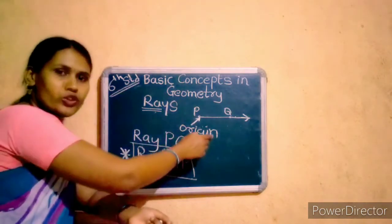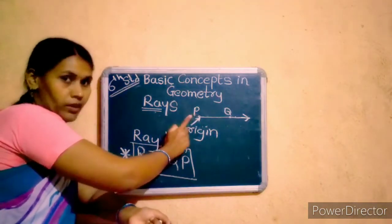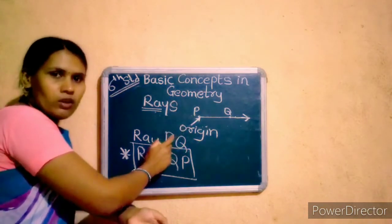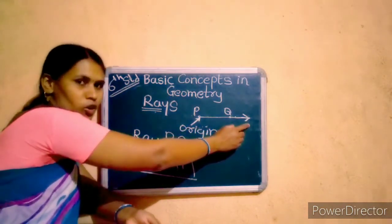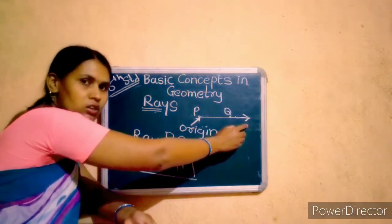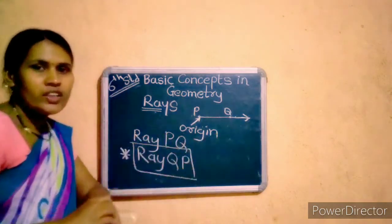We have learned what is meant by origin of ray, what is meant by origin point of ray, and what is meant by this arrowhead. Why we draw this arrowhead.